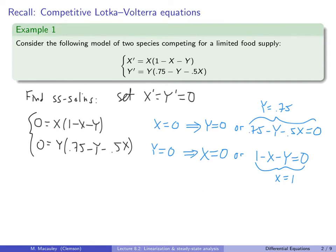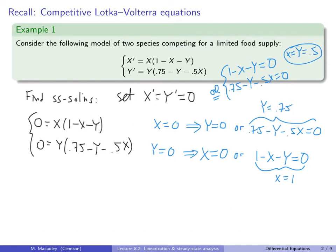If neither x nor y are zero, then both other expressions must be zero simultaneously: 1 minus x minus y equals 0 and 0.75 minus y minus 0.5x equals 0. It's easy to see that x equals y equals 0.5 is a solution to that system. Each equation is a product of two things, and one of those things must be zero.